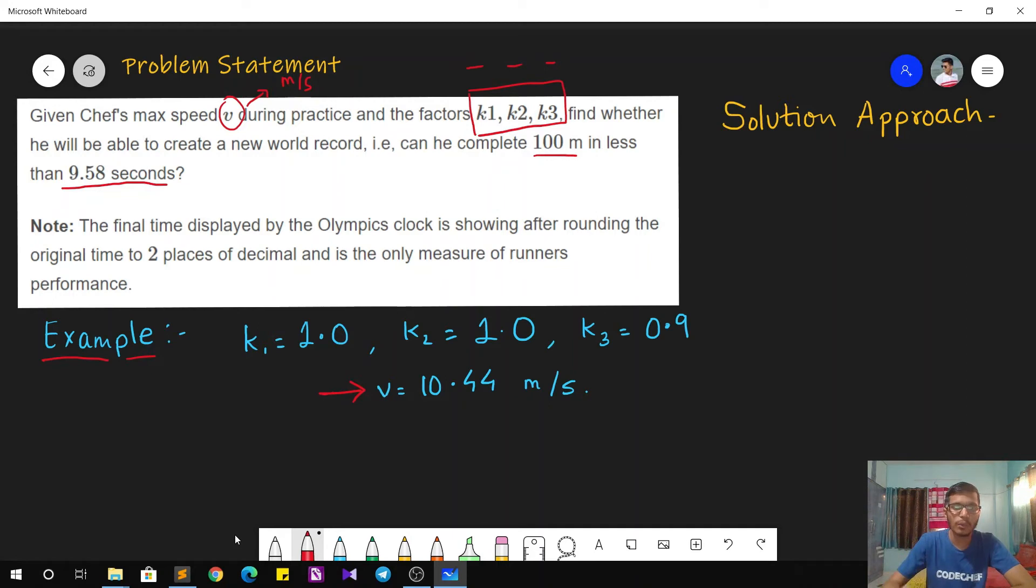Now based on this data, we have to tell what will be the time taken by Chef during the actual race and is it less than 9.58 seconds? Because if it is less, then yes, he will create a new world record. If not, then he will not.